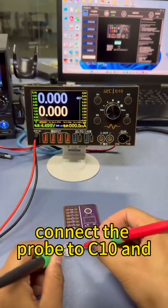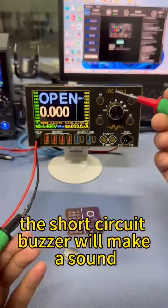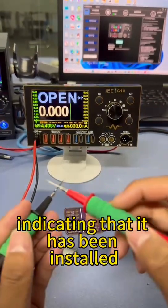Connect the probe to C10 and the short circuit buzzer will make a sound, indicating that it has been installed.